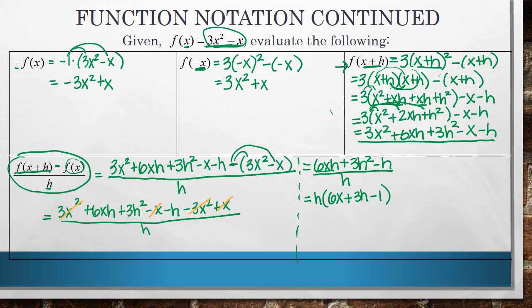And you can see if I distribute this h through, I'd get h times 6x, which is 6xh, h times 3h, which is 3h squared, and h times negative 1 is negative h. So those are equivalent statements. And now this is all over h.